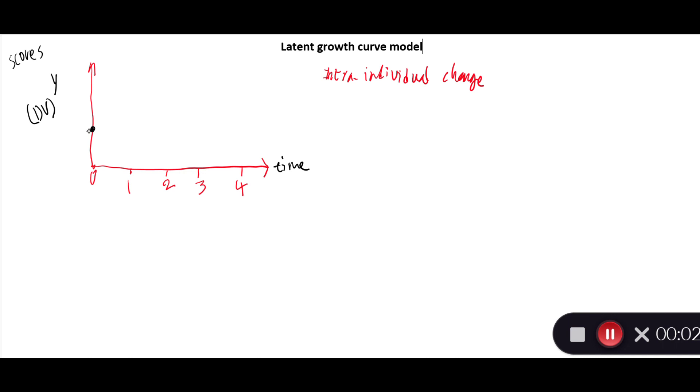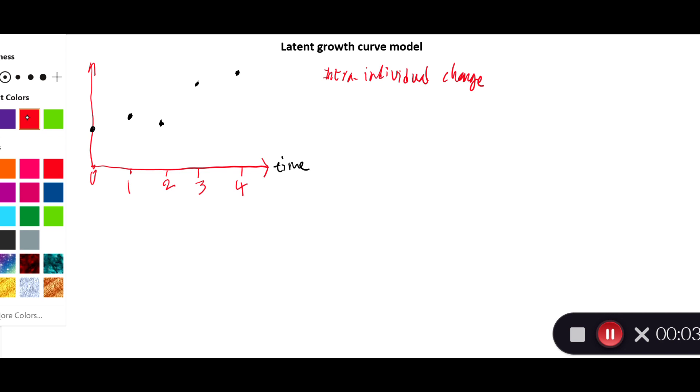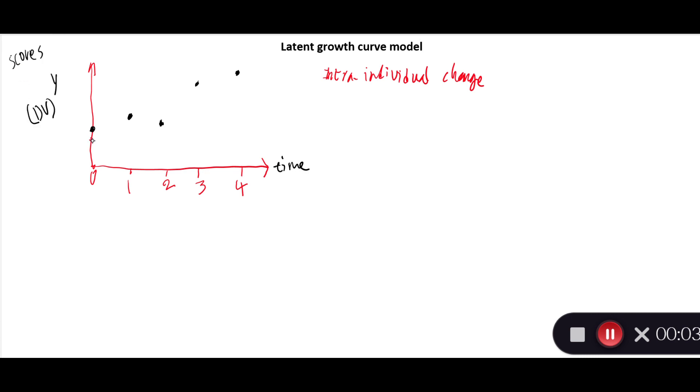In time two, the person scored a bit higher, whereas in time three the score went down, but in time four it changed in a different way. Now we want to see if it's possible to include an individual growth curve for this person. It's basically very easy. We're going to include a regression line in this way, so we have a point here which intersects the y-axis, and that's called the intercept. And we draw this line—this is the individual growth curve for this person.